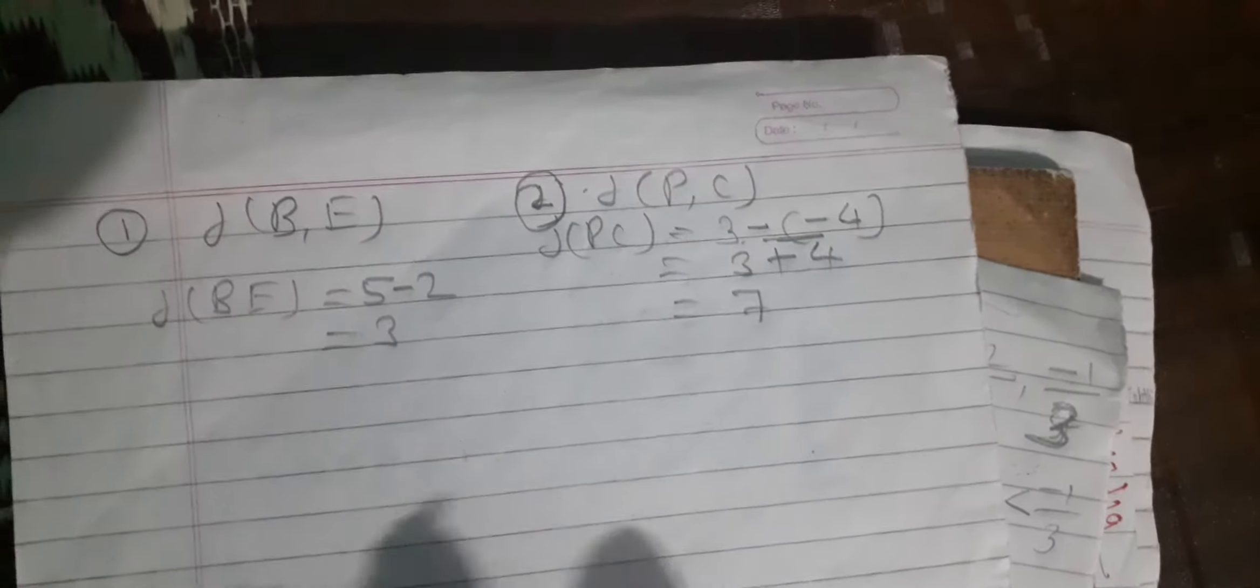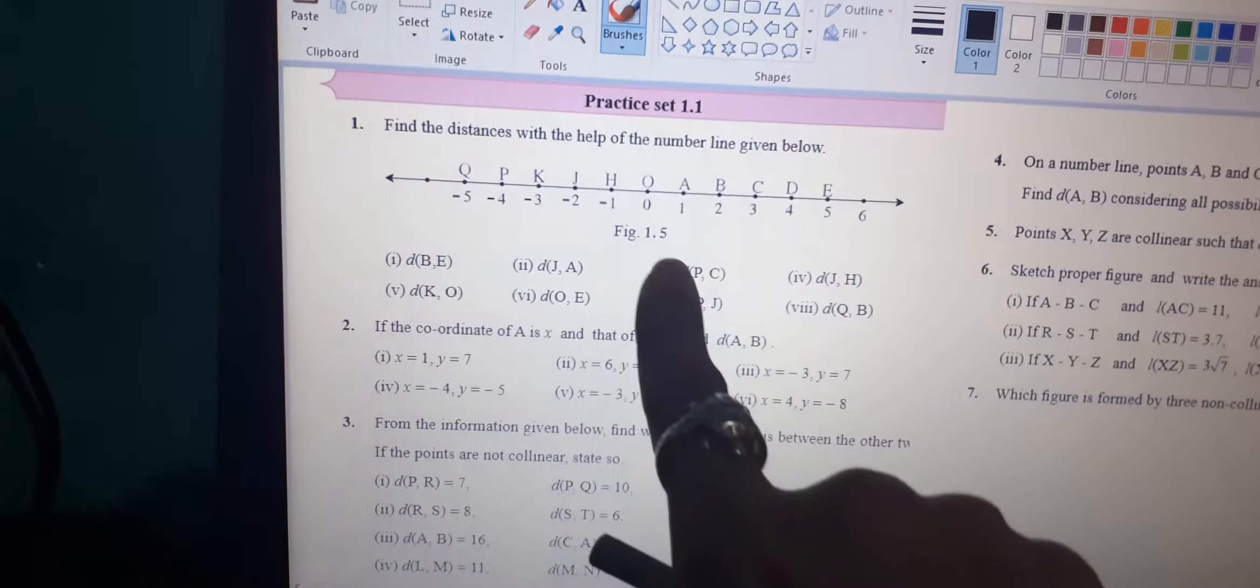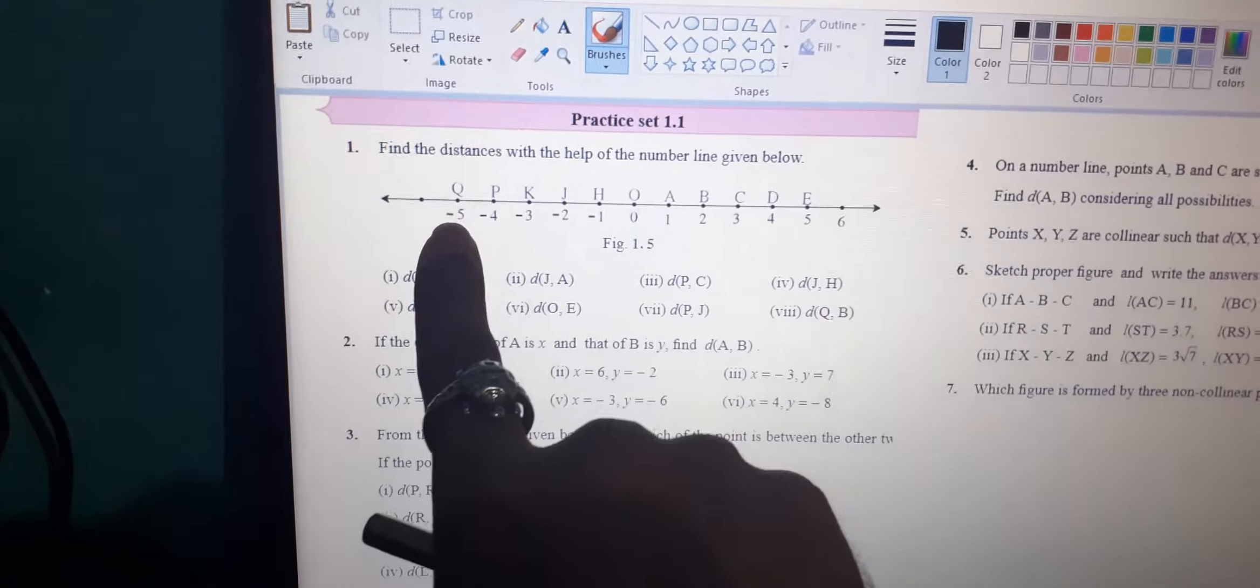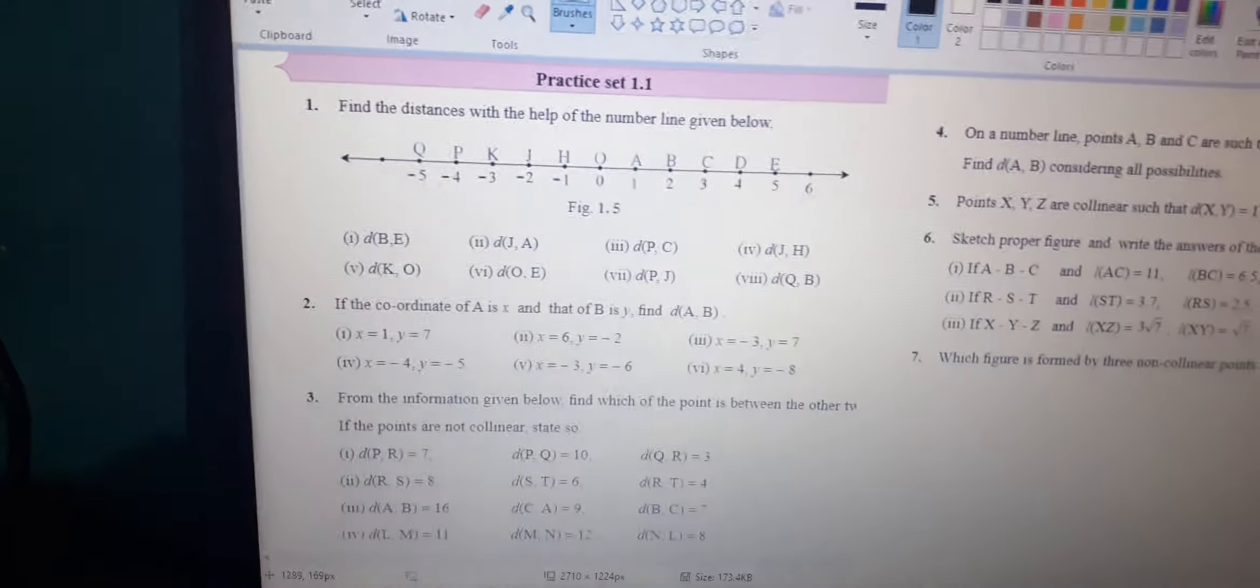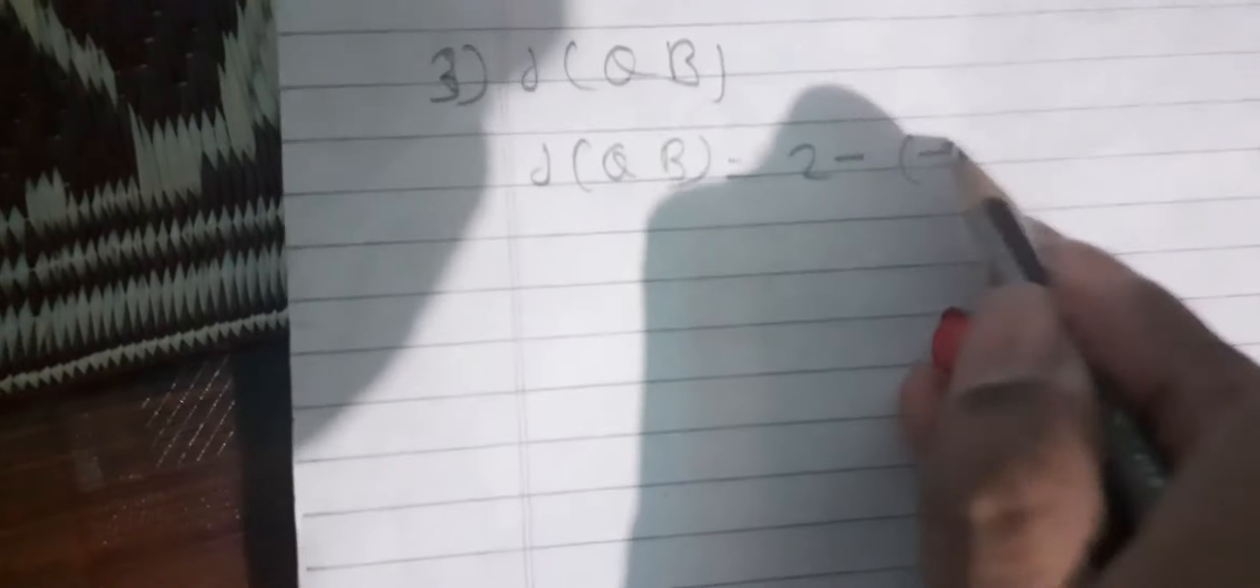Understand? We will do one more question. Distance QB: Q value is minus 5 and B value is 2. Distance QB is equal to minus 5 and 2. Now 2 is bigger. 2 minus minus 5 equals 2 plus 5 equals 7.